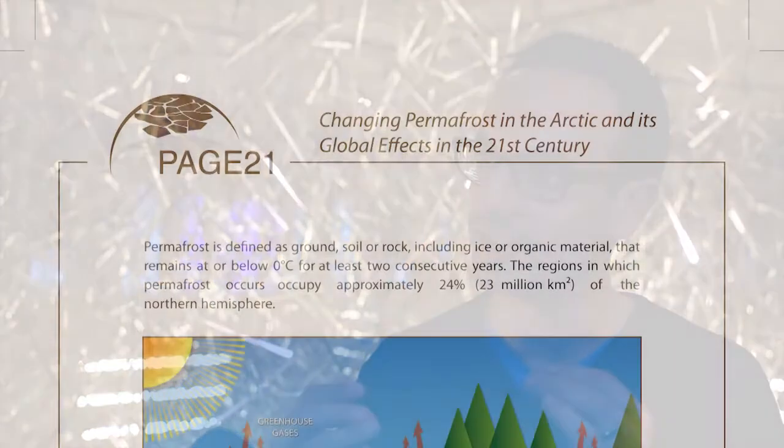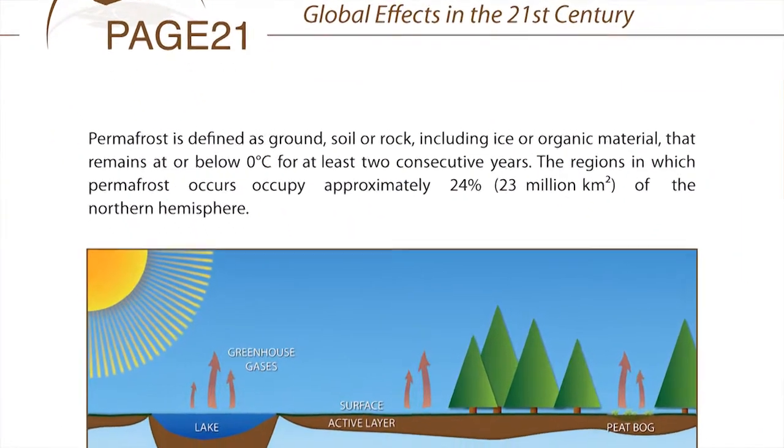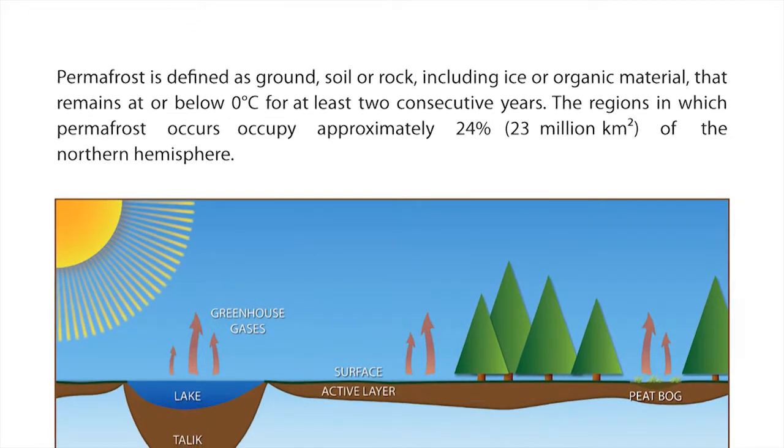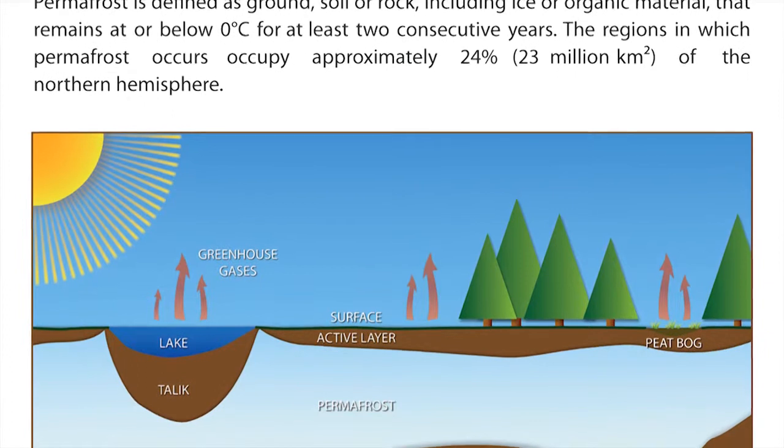Permafrost is first and foremost not a material or earth or anything you would touch. It is actually a thermal condition of the ground. That means we define permafrost as ground or material that remains frozen for at least two consecutive summers. So you don't necessarily refer to a rock or to ice, but to a material that is frozen.